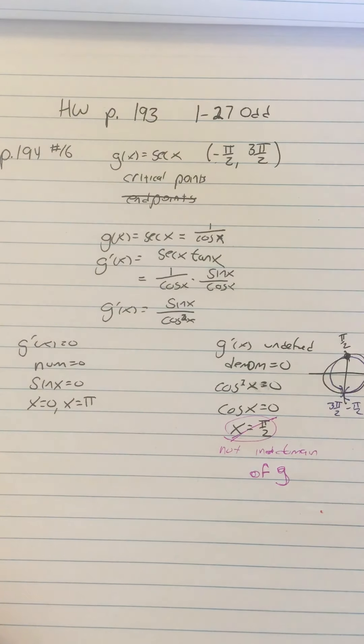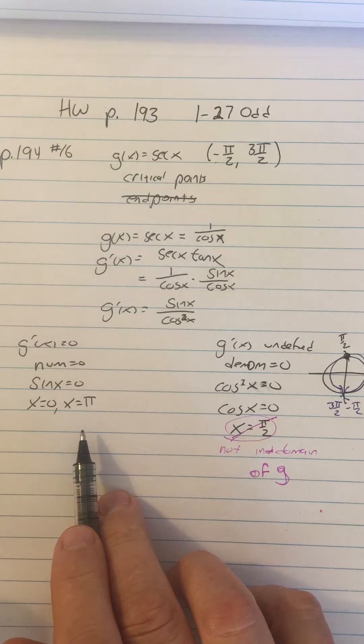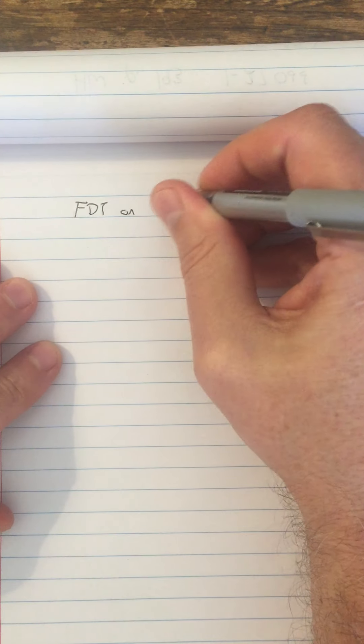Now here's what I have, two critical points: x equals zero and x equals pi. What I'm left with doing is determining if these points are minima or maxima or neither one. So let's take them one at a time.